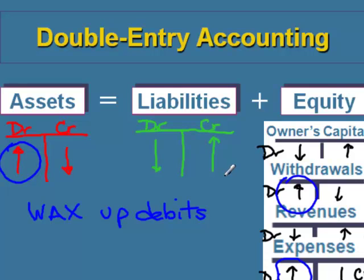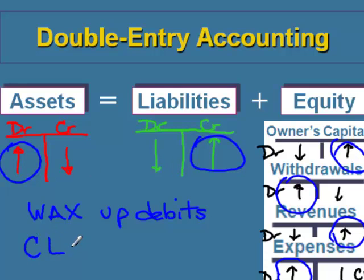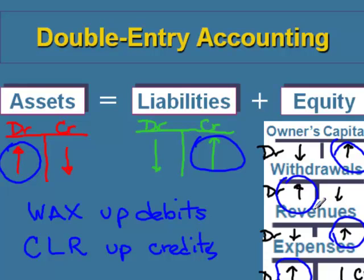When you look at the other accounts — liabilities, capital, and revenues — those types of accounts all go up with credits. So the acronym we use to help remember debits and credits is that we WAX up debits and clear up credits.